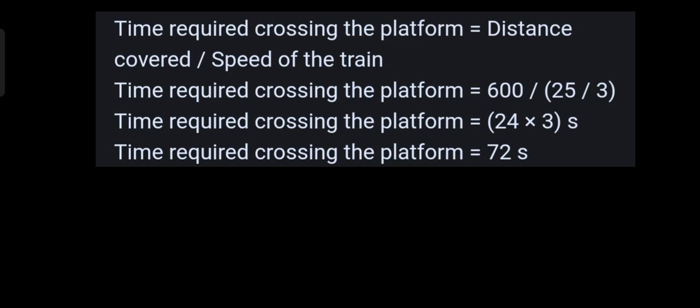Time is equal to 600 into 3 divided by 25, which equals 72 seconds. So the 400 meter train crosses the 200 meter platform in 72 seconds.